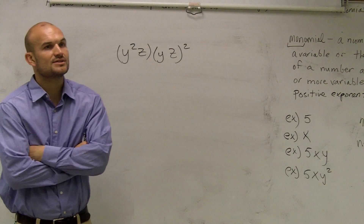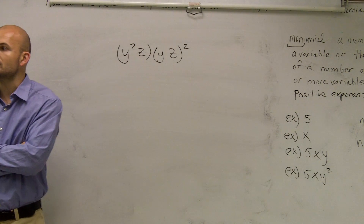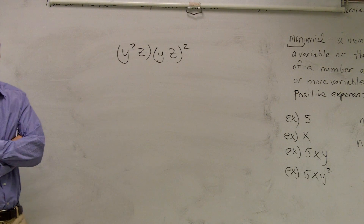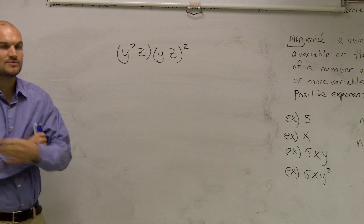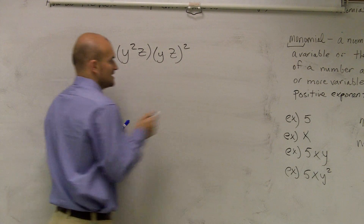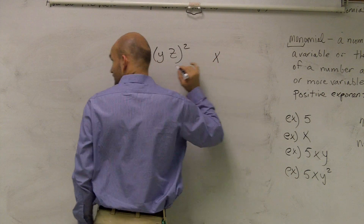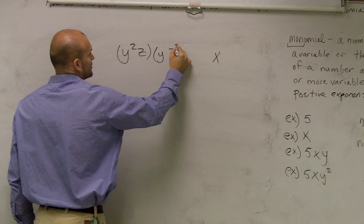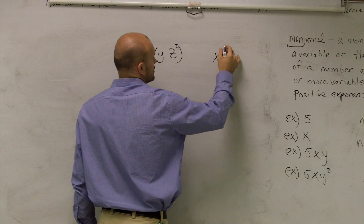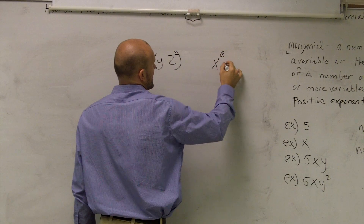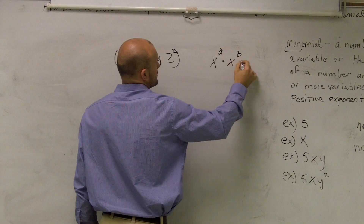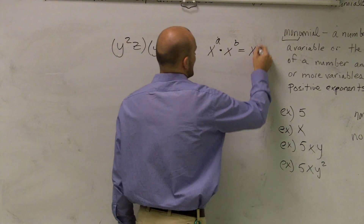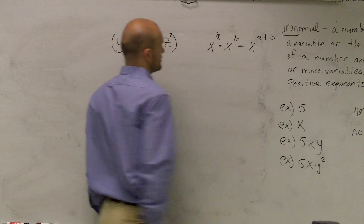So what I'm going to want to do is think about what are my rules of exponents that I could use for this. There's a rule of exponents when we're multiplying two numbers with exponents. That rule states: if I have x to the a times x to the b — two monomials multiplied by each other with exponents — then I'm going to add the exponents.